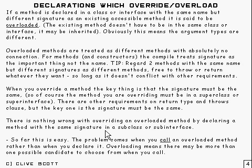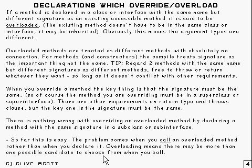There's nothing wrong with overriding an overloaded method by declaring a method with the same signature in some subclass or subinterface. All this is quite simple so far. The problem comes when you call an overloaded method rather than when you declare it, because when you call it, there can be a whole load of different methods which that call could be referring to. The problem then is working out which is the right one. Overloading — that is, working out which one actually gets called — is something that the compiler does at compile time.